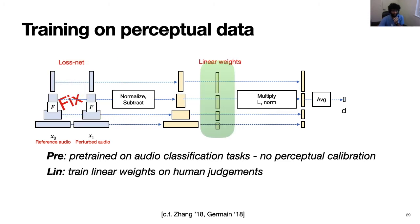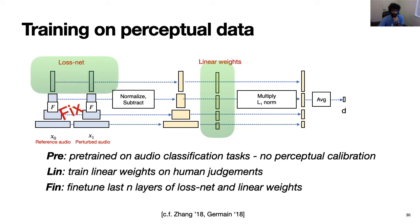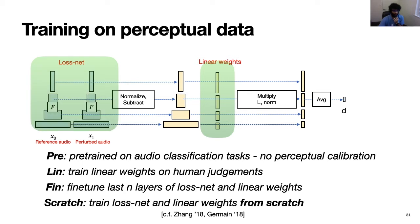Next, we add certain linear weights to the model. These weights can be considered a linear calibration of an off-the-shelf network. So this is the LIN or the linear weights trained model as only the linear weights are trained on the perceptual dataset. Next, we look at a fine-tune model where we pre-train the weights first on audio classification tasks as in PRE, but then also fine-tune the last N layers and the linear weights on perceptual data. This model is called FIN, which is short for fine-tune. And lastly, let's look at a scratch model where we train everything from scratch on perceptual data. This includes the loss network and the linear weights.